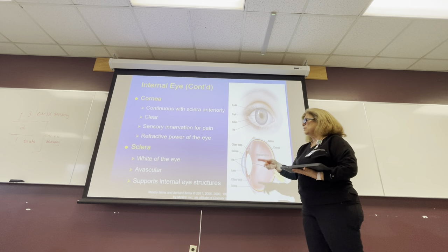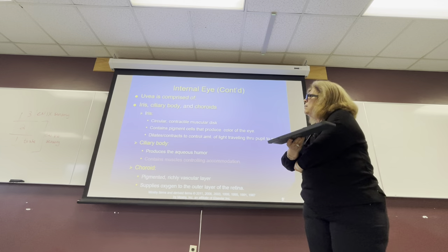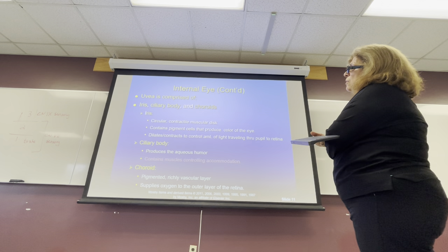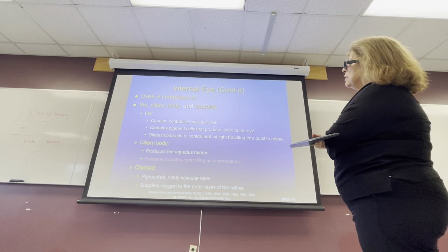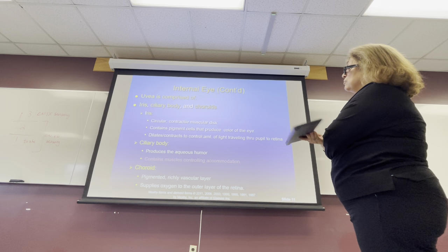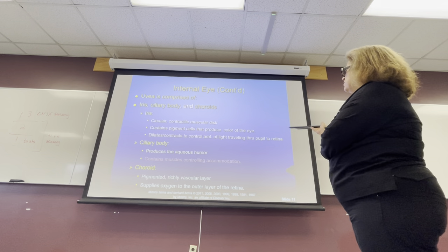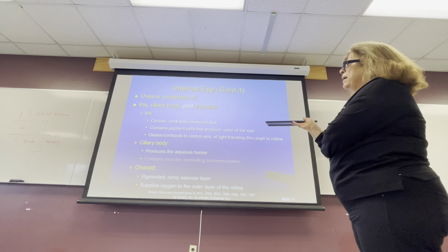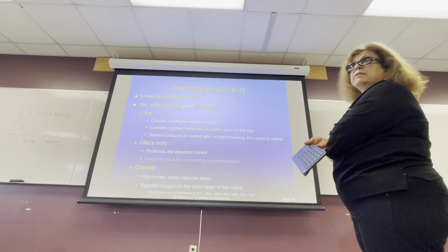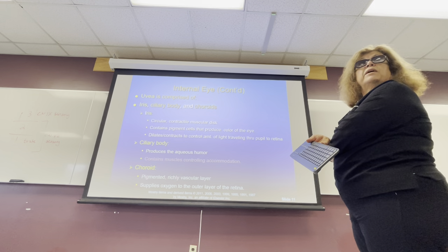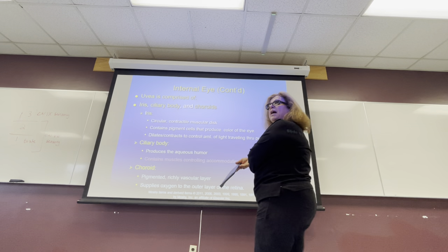The sclera is the white of the eye — it's avascular and supports the internal eye structure. The iris is the color of the eye. Everyone's iris has a different color. It's a circular contractile muscular disc containing pigment cells that produce the color. It dilates and contracts to control the amount of light traveling through the pupil.